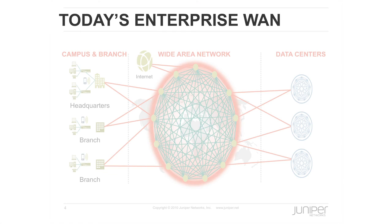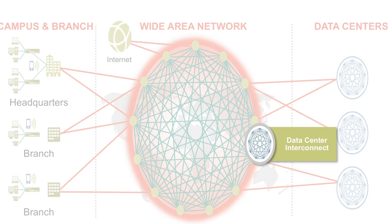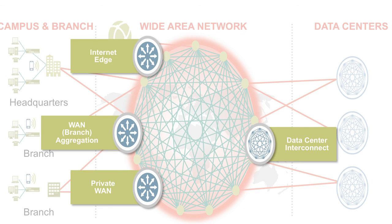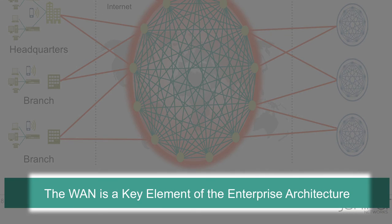The WAN has to be reliable, scale, perform, and connect while being economical and enabling business growth. The key WAN touch points of your enterprise network are data centers, branches, campuses, dispersed geographical locations, access to public internet, remote employees, and partners. The WAN is the critical network glue that holds and connects your enterprise.